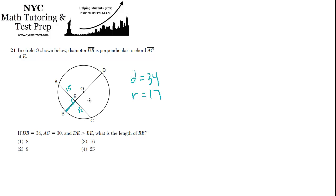The key idea is to realize that OB is a radius, so it's 17 units long. If we knew how long EO was, we could do 17 minus EO and get BE. We don't know EO directly, but we can draw OC. OC is also a radius — 17 — and we know this is a right angle, so now we can deal with that right triangle.